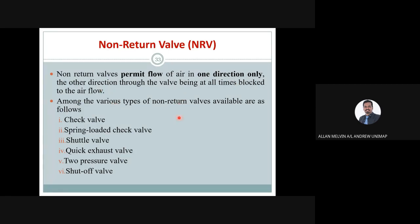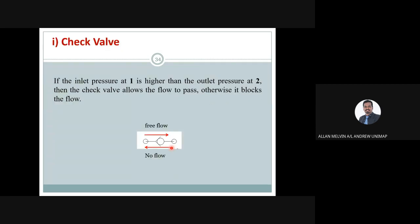There are six types of non-return valve. The first is the check valve, then spring-loaded check valve, shuttle valve, quick exhaust valve, two pressure valve, and shutoff valve. Each of these will block flow in a particular direction according to its own setup. We will quickly look at each one.